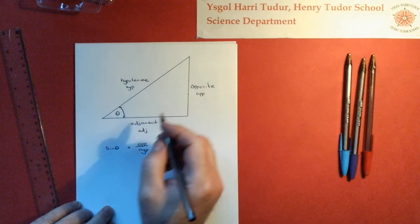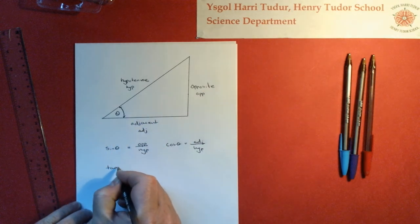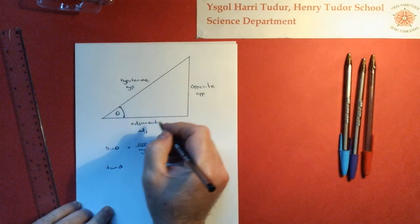And last but not least, tangent, tan of theta, is opposite over adjacent.